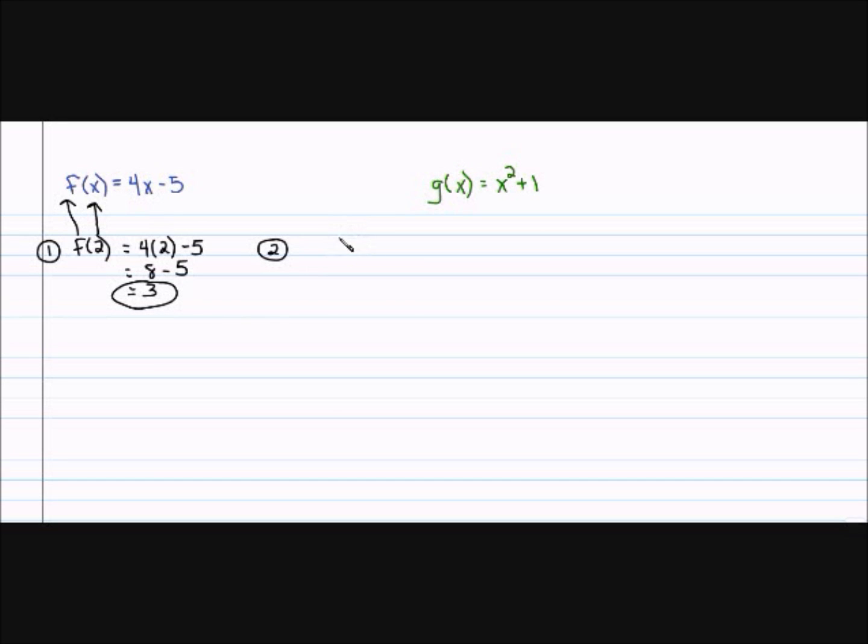So, let's take a look at number 2, f of, that's not a c, that's a 3. So, f of, that's not a c, you're going to use the same problem, equals 4x minus 5. Anywhere I see an x, I'm going to put a c, so my problem is 4c minus 5, and I'm done.